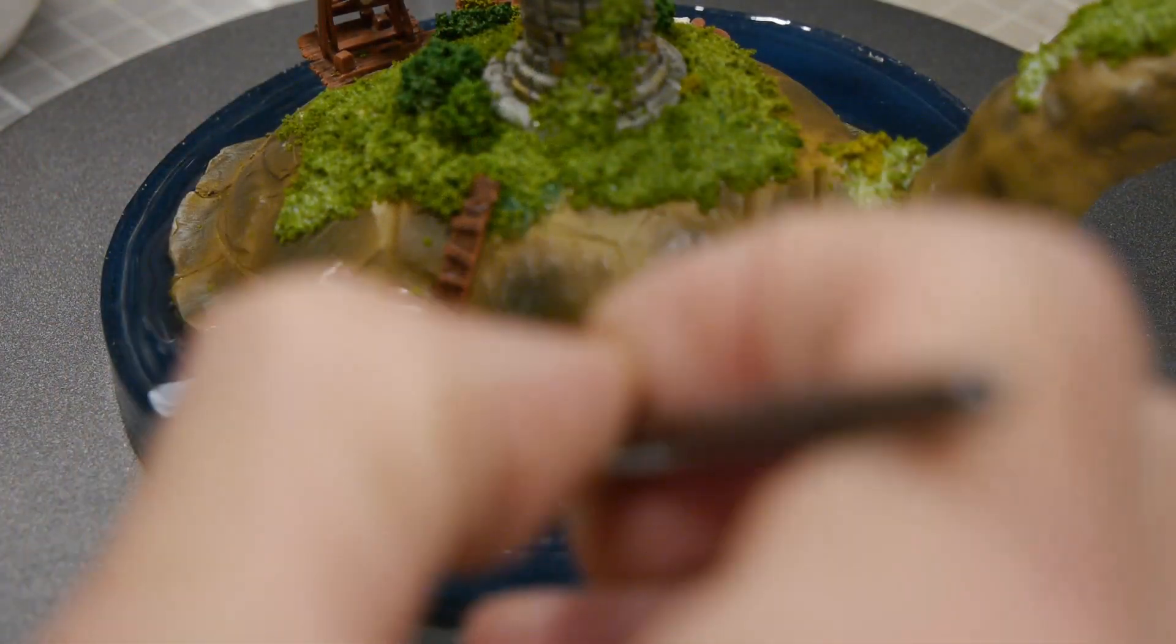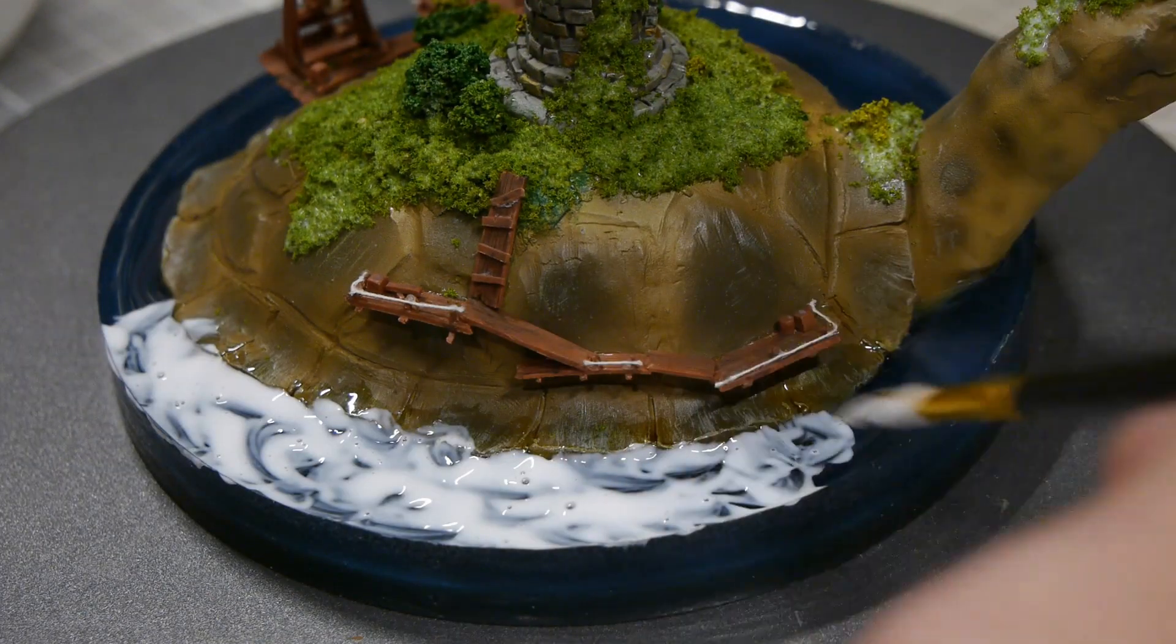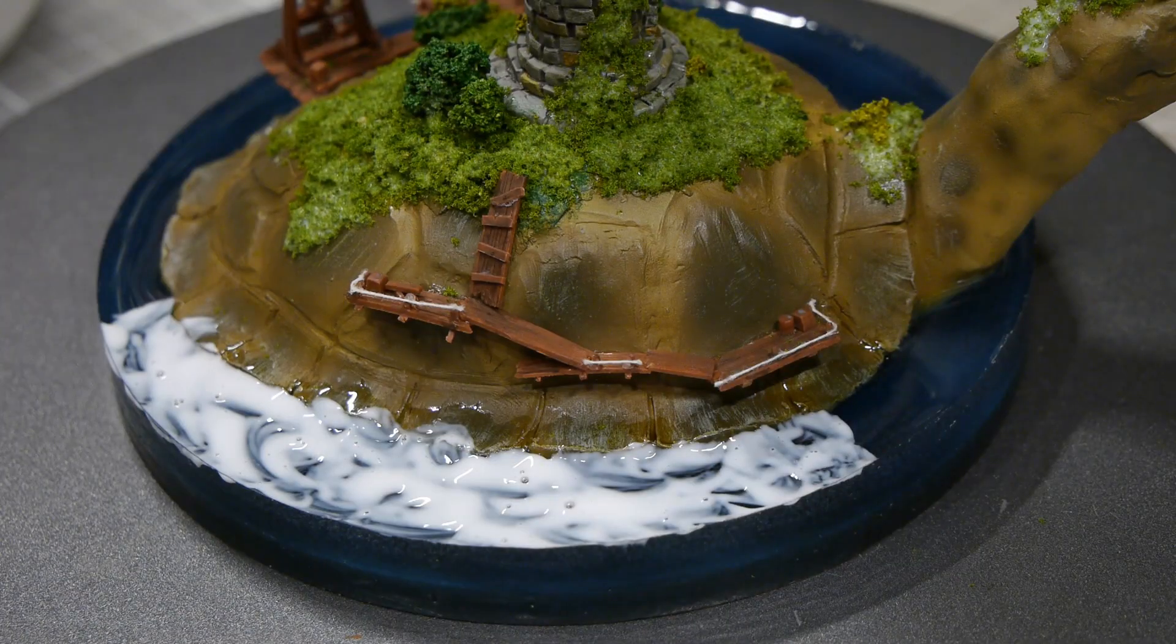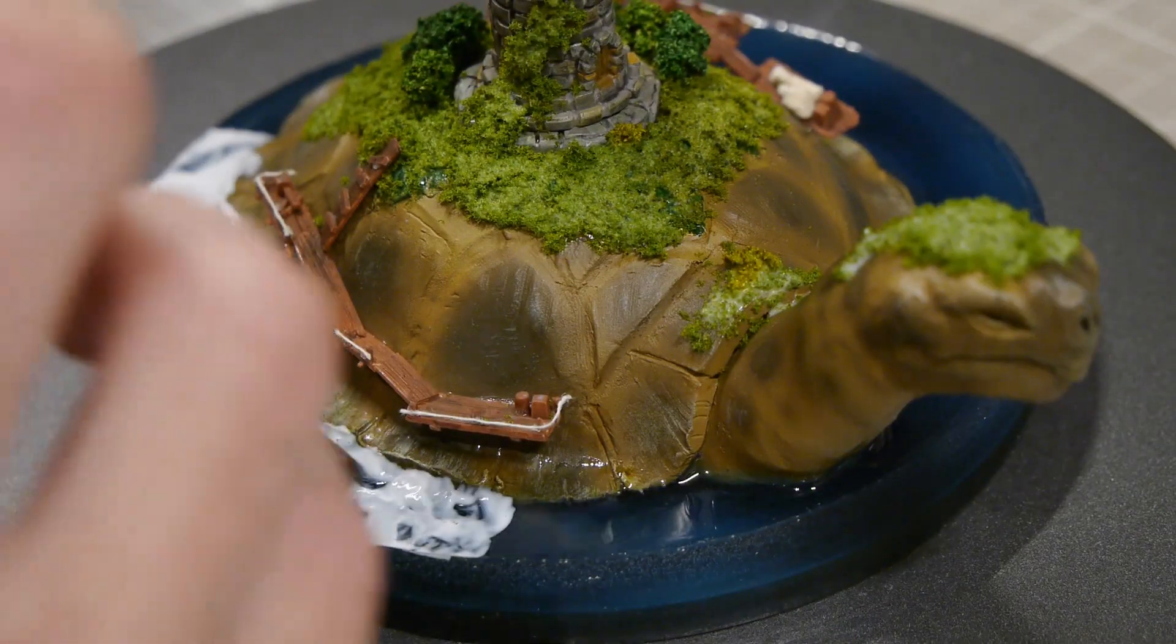To finish it all off I add a nice thick layer of gloss mod podge to the resin. A straw works wonders here for giving the waves a more natural look and I work in small sections to make sure that it doesn't harden too much before I get a chance to shape it.